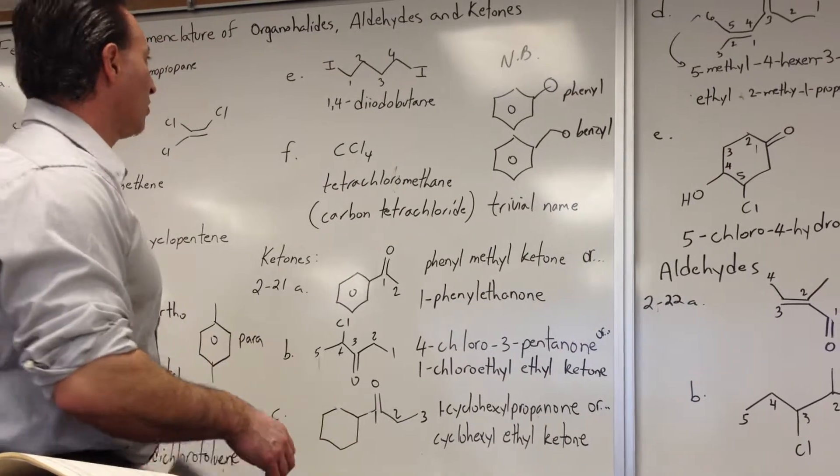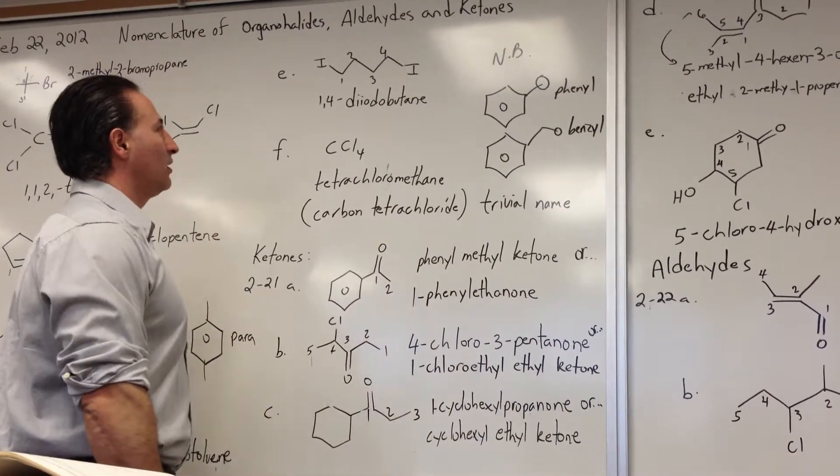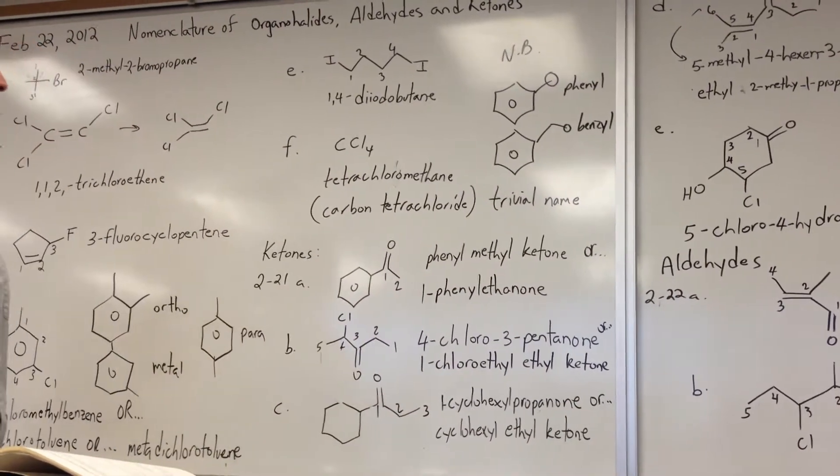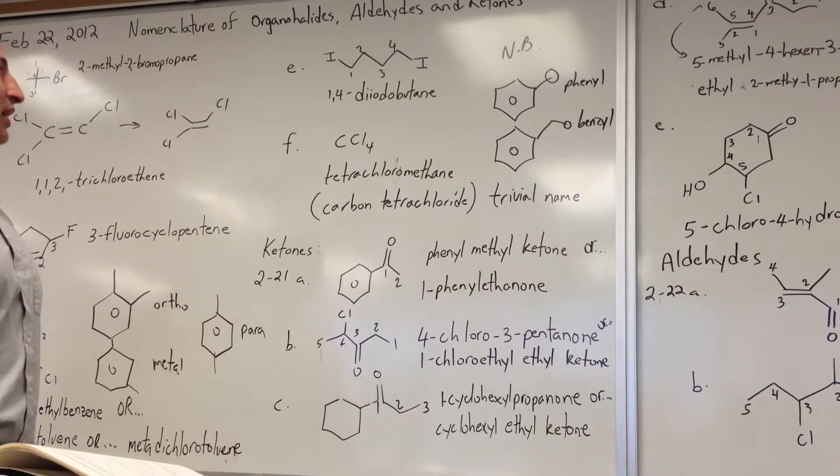E shows a molecule of butane with iodine atoms on either end of it. So it's called 1,4-diiodobutane.